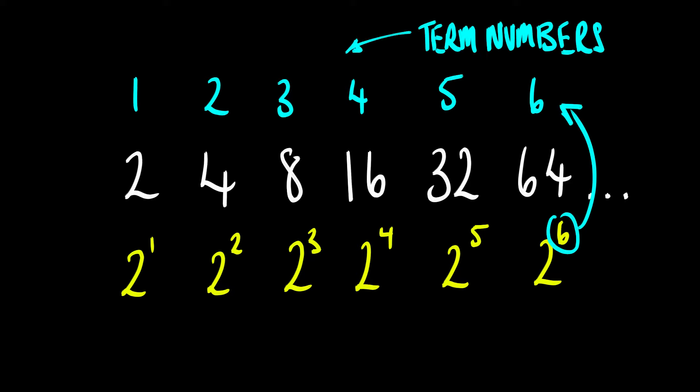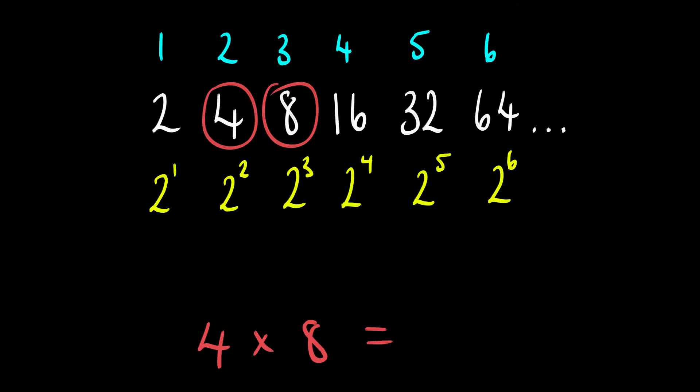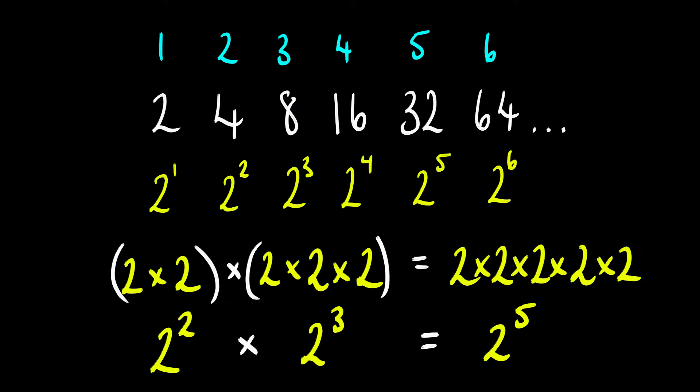Allow me to explain. Take the geometric series of the powers of 2, where each term is the previous term multiplied by 2, or in other words, each term is 2 to the power of its term's position, commonly referred to as the term number. Notice that these term numbers make up an arithmetic sequence. Now, say you multiply 4 and 8 together, and we know that that's 32, but if you look at its term number of 5, that's the sum of 8 and 4's term number 3 and 2. This is, of course, because when multiplying 2 powers with the same base, in our case it's 2, you add the exponents. Though this may not seem groundbreaking, this actually forms the basis of logarithms.